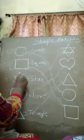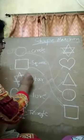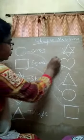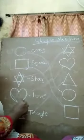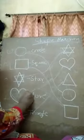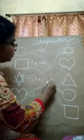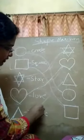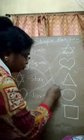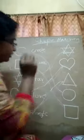Next one is star — star to star. Then love — love to love. Then triangle — triangle to triangle.